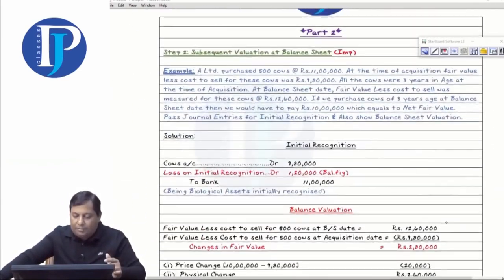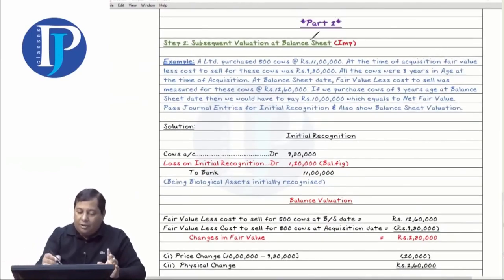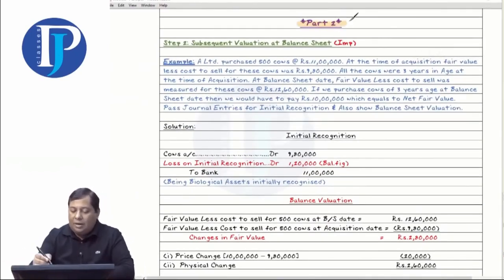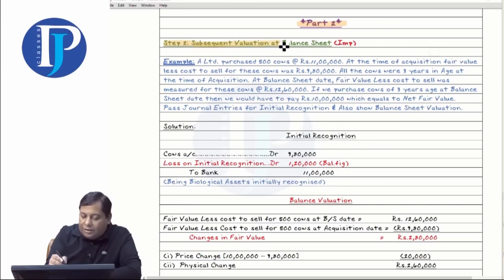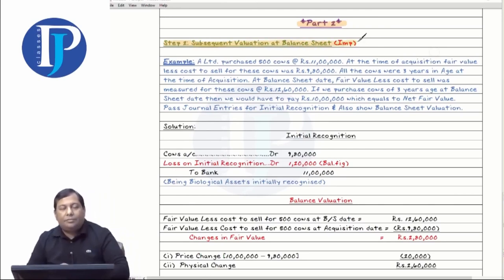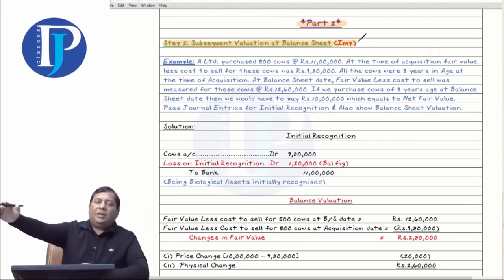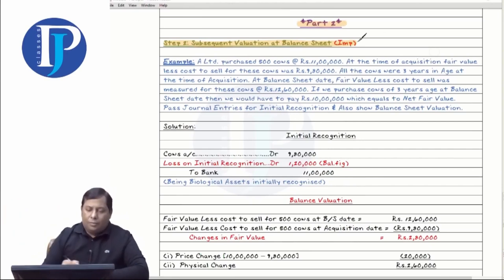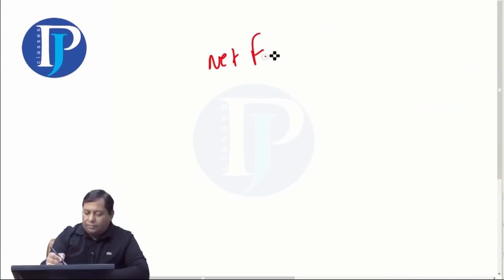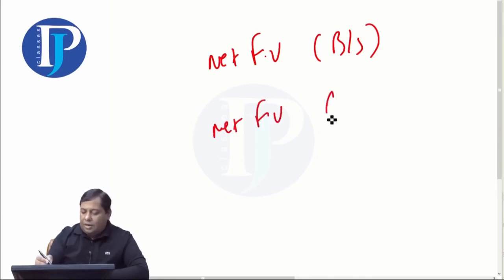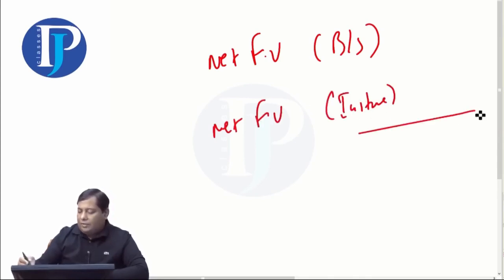Now this is the second video starting here — subsequent valuation on balance sheet date. The animal that you had initially recognized, if it is still present with you till the balance sheet date, you will have to do its evaluation. Take the net fair value on the balance sheet date, subtract the initial net fair value — whatever difference you get will be a fair value gain or loss, and you put it in P&L.